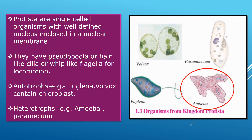Characteristics of kingdom Protista: these are single-celled living organisms with a well-defined nucleus with a nuclear membrane. For locomotion they have pseudopodia — flagella-like or hair-like structures used for movement. Kingdom Protista is both autotrophic and heterotrophic. Autotrophic examples include Euglena and Volvox, which prepare their own food. Heterotrophic examples include amoeba and paramecium, which depend on other living organisms for food.